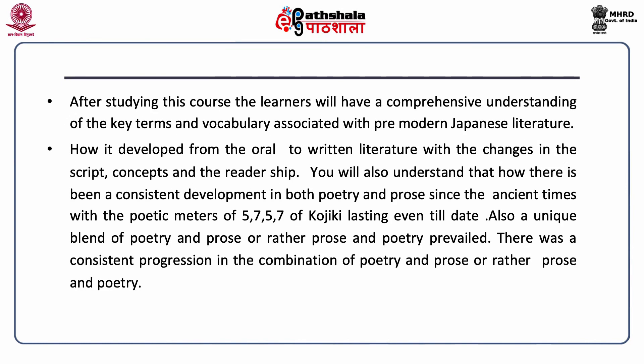After studying this course, learners will have a comprehensive understanding of the key terms and vocabulary associated with pre-modern Japanese literature, and how it developed from oral to written literature with changes in script, concepts, and readership. You will also understand that there has been a consistent development in both poetry and prose since ancient times, with the poetic meter of 5-7-5-7 of Kojiki lasting even till date, and a unique blend of prose and poetry throughout.